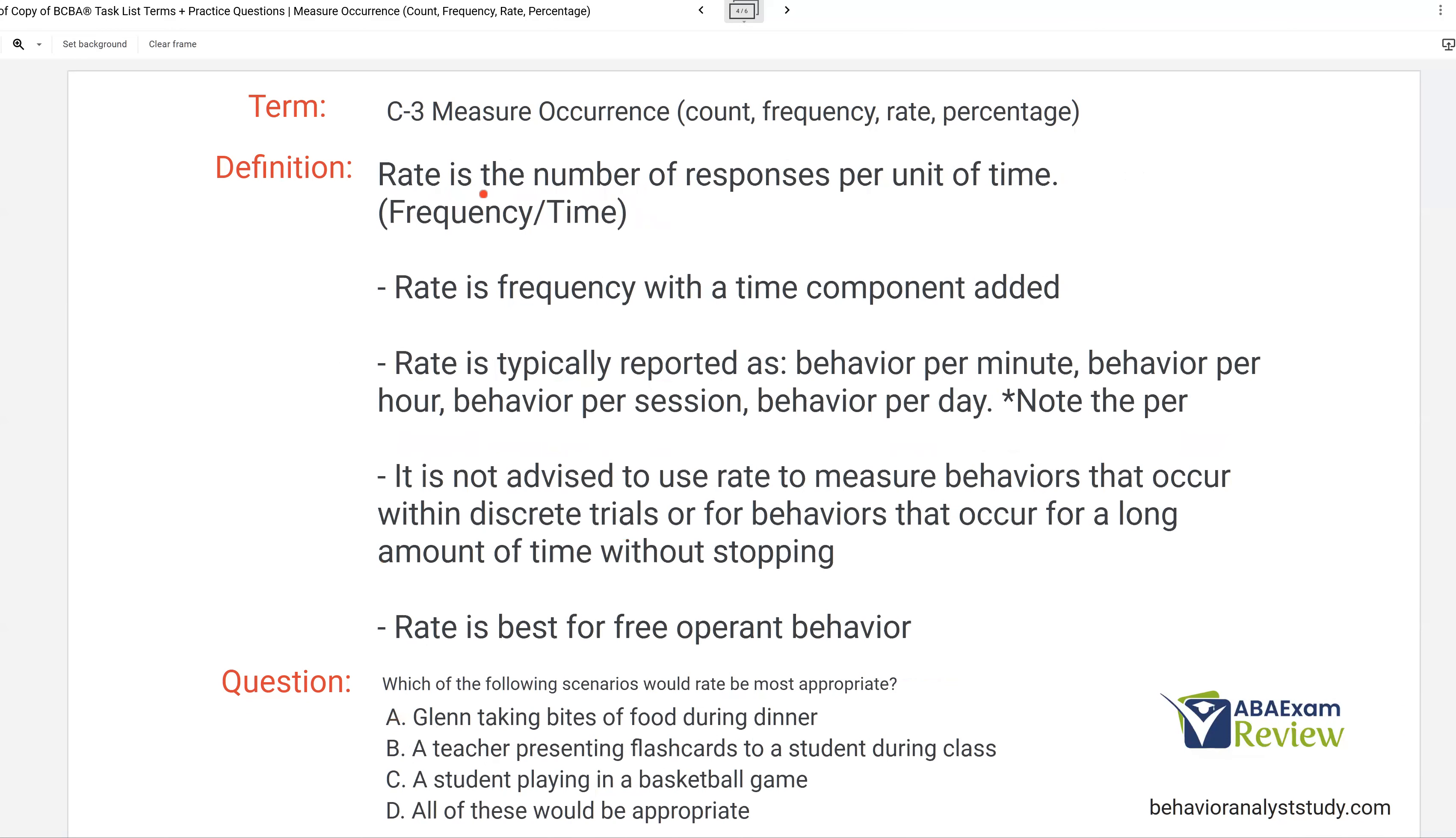Now we have rate. So rate and frequency are often used interchangeably, but they're not the same thing. Frequency is our count, right? So we have our frequency here. Rate, we're going to add a time component. It's the number of responses per unit of time. Frequency over time. Frequency per time. Rate is typically reported as, let's say, behavior per minute, behavior per hour, behavior per session, behavior per day. Notice we have our frequency and we have our time.